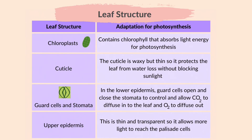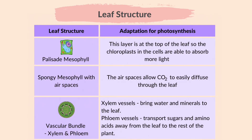The upper epidermis is thin and transparent so it allows more light to reach the palisade cells. The palisade mesophyll tissue layer is at the top of the leaf so the chloroplasts in the cells are able to absorb more light. The spongy mesophyll tissue has air spaces which allow carbon dioxide to easily diffuse through the leaf. The vascular bundle consists of xylem and phloem: the xylem vessels bring water and minerals to the leaf, and the phloem vessels transport sugar and amino acids away from the leaf to the rest of the plant.